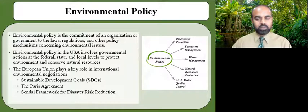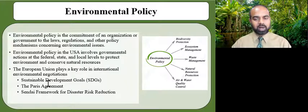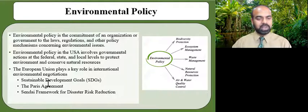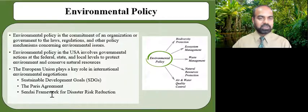The European Union plays a key role in international environmental negotiations. It is a party to numerous global, regional, or sub-regional environmental agreements on a wide range of issues such as nature protection and biodiversity, climate change, and transboundary air or water pollution. The EU helped shape several major international agreements adopted in 2015 at the United Nations level, such as the 2030 Agenda for Sustainable Development, which includes 17 Sustainable Development Goals (SDGs), the Paris Agreement on Climate Change, and the Sendai Framework for Disaster Risk Reduction.